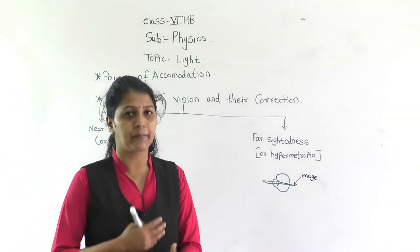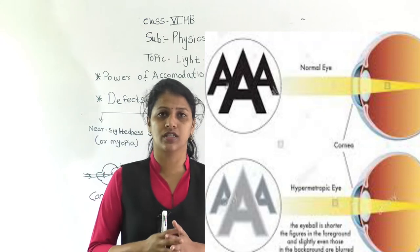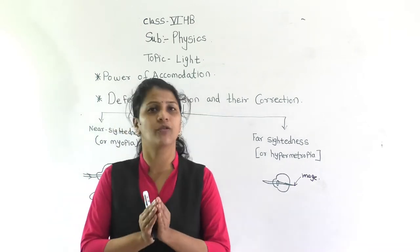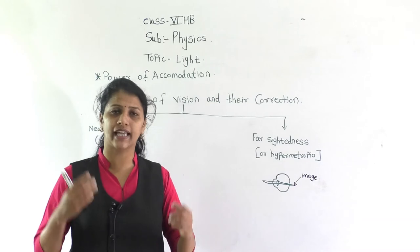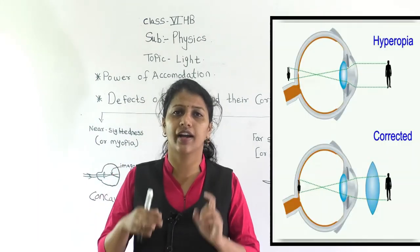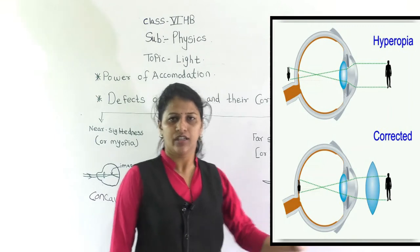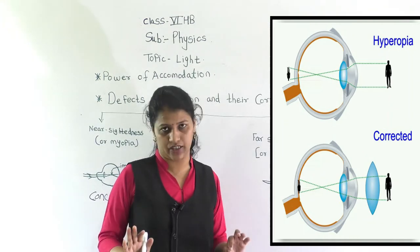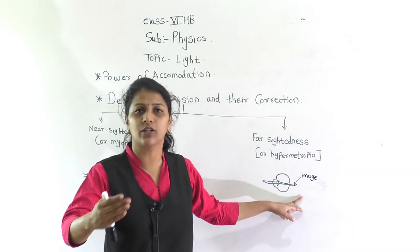The next defect is far-sightedness, which is also called hypermetropia. Some persons are unable to see far objects, but they can easily see nearby objects. They get a problem seeing far objects. In this case, the image is formed behind the retina, causing stress on the retina, so they are unable to see the far object properly and clearly.